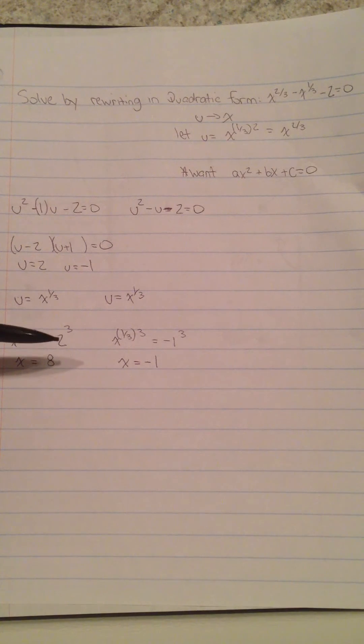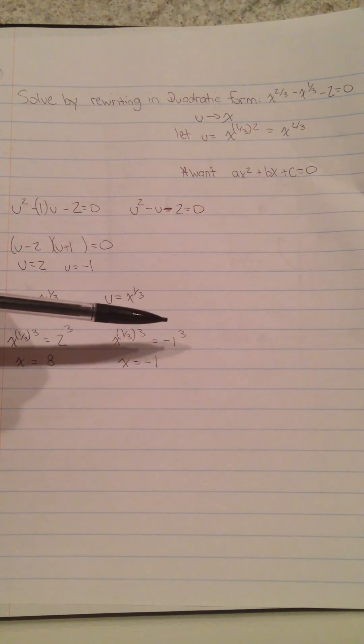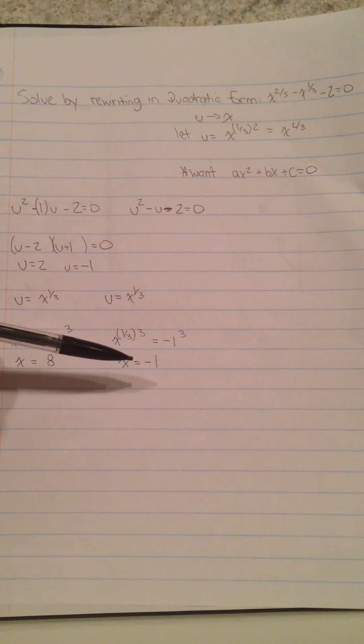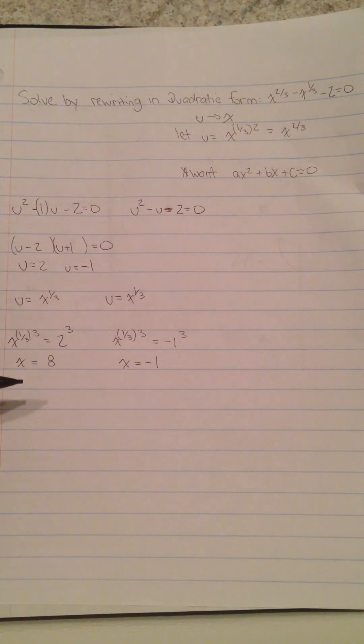We're going to get x = 2³, which is 8. Same thing over here, we're going to bring -1 raised to the three, which will give you -1. And here are your answers. Thank you.